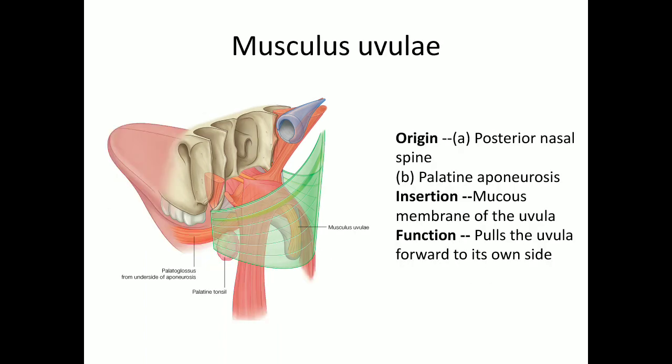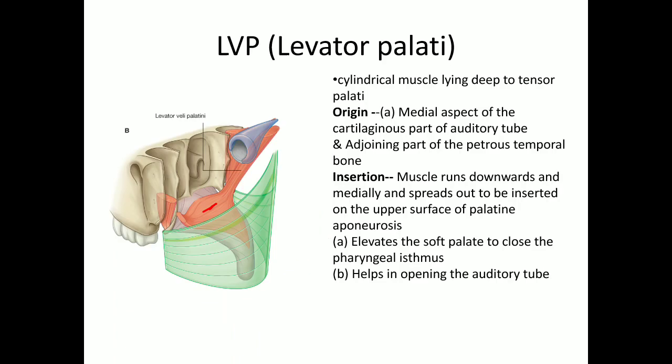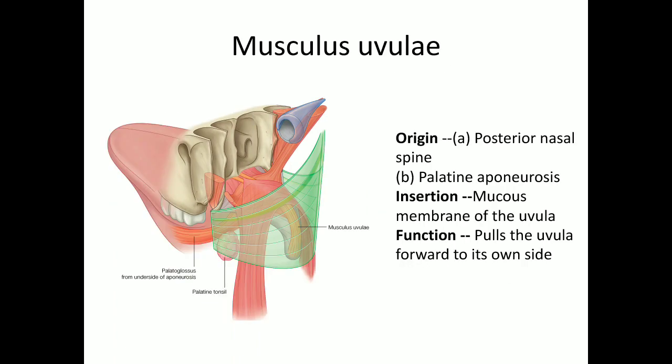The musculus uvulae originates from the posterior nasal spine and the palatine aponeurosis, and inserts on the mucous membrane of the uvula. Its function is to pull the uvula forwards and to its own side, so it is responsible for the movement of the uvula.